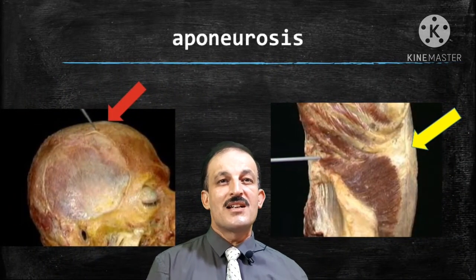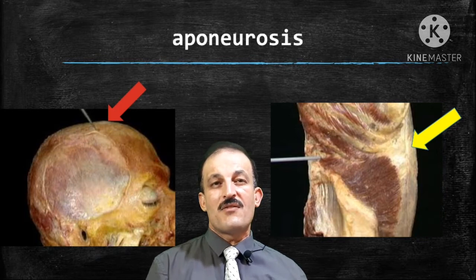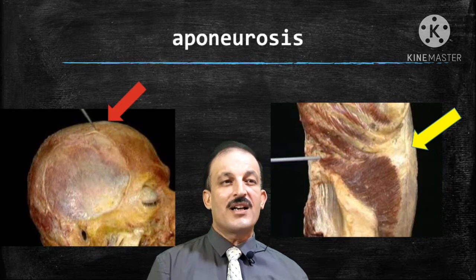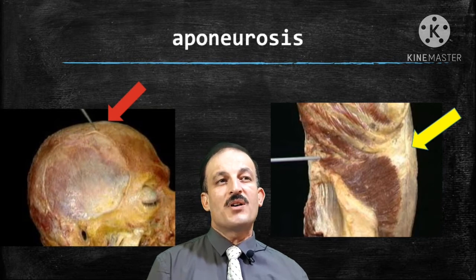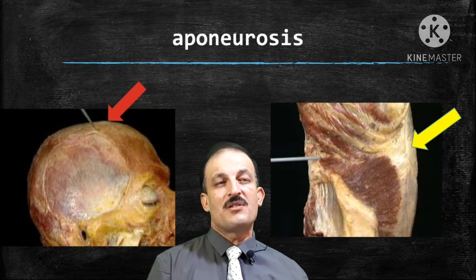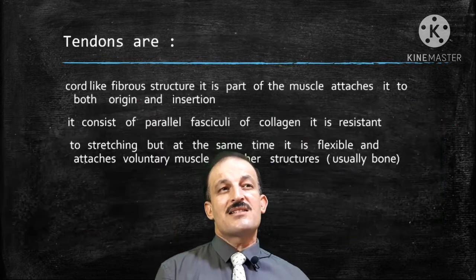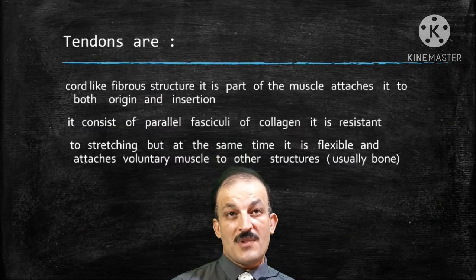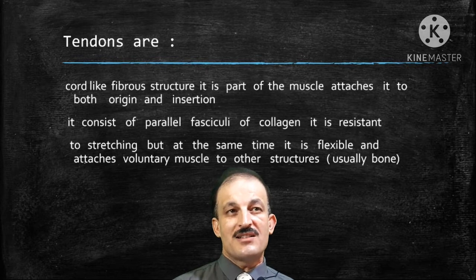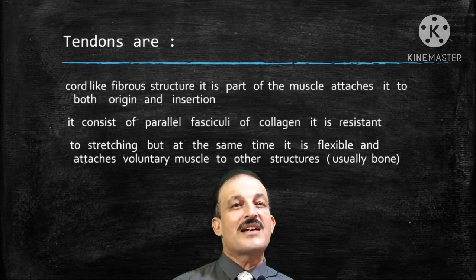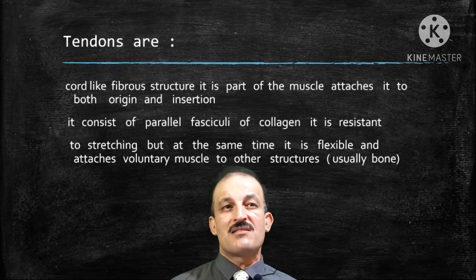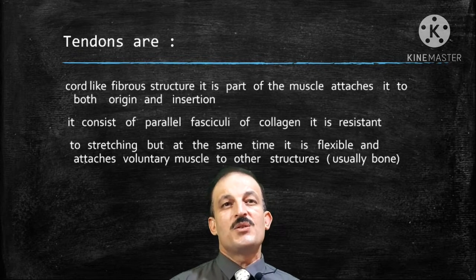Examples of aponeurosis include the aponeurosis of the muscles of the anterior abdominal wall, which are flat, and the epicranial aponeurosis, also called galea aponeurotica, which is the flat tendon of the occipitofrontalis muscle. Tendons are cord-like fibrous structures and part of the muscle, attaching it to both its origin and insertion. They consist of parallel fasciculi of collagen, are resistant to stretching but flexible, and attach voluntary muscles to other structures, usually bone.